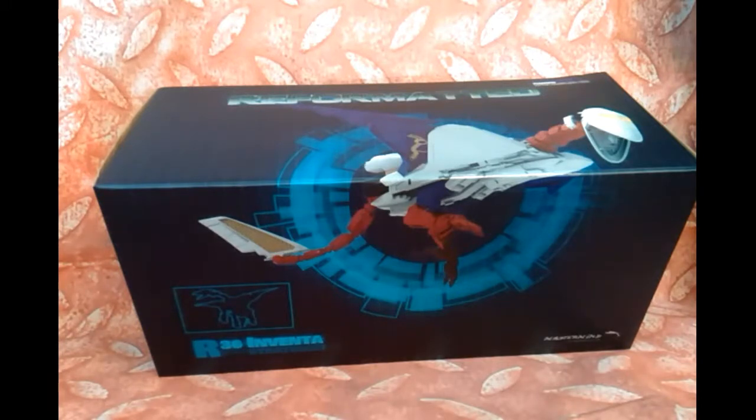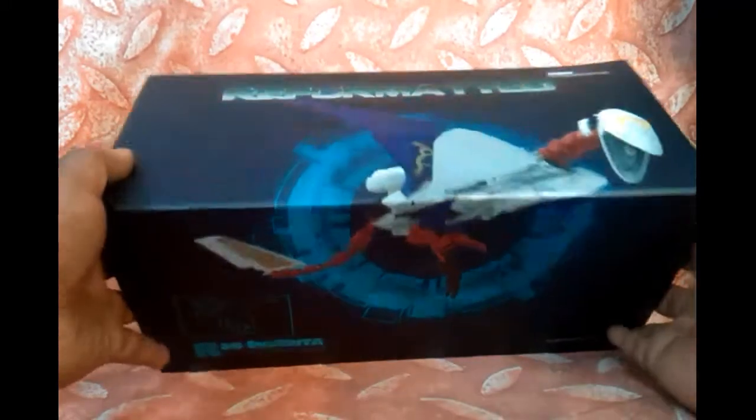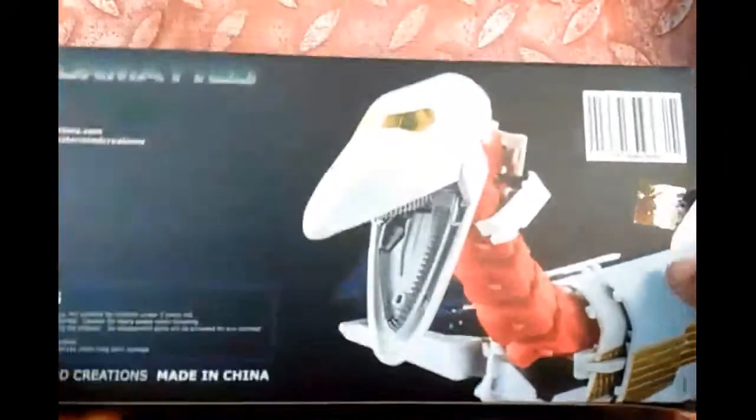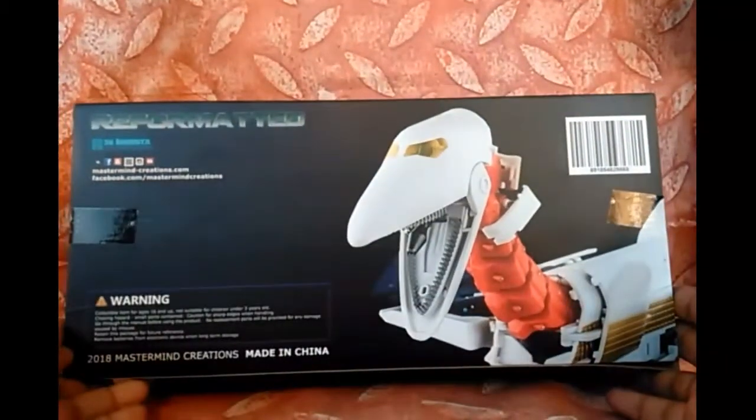We're going to go ahead and get it done. As you can see this is the front of the box but it also goes into the top of the box where you can see the actual picture of their Sky Lynx. There's the side of the box and there is the back of the box.